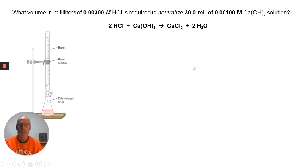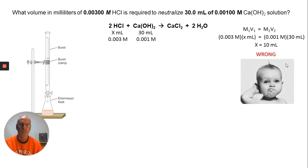What many of you did was write down the information - looking for a volume with this molarity, given this volume and molarity. You thought you could simply say molarity of the acid times volume of the acid equals molarity of the base times volume of the base. You plugged in 0.003 times X equals 0.001 times 30, and found the answer 10 milliliters, which was a choice. Unfortunately, it was the wrong choice.